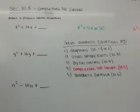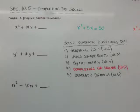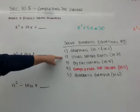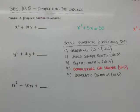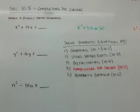Aloha gang. This is section 10.5, which is completing the square. We're going to solve quadratic equations by doing that. A quick review — there are five different ways to solve quadratic equations: you can graph and find the x-intercepts, use square roots, solve by factoring, complete the square, or use the quadratic formula. I said in an earlier video we were skipping graphing and completing the square, but times have changed, so we have to put them back in.